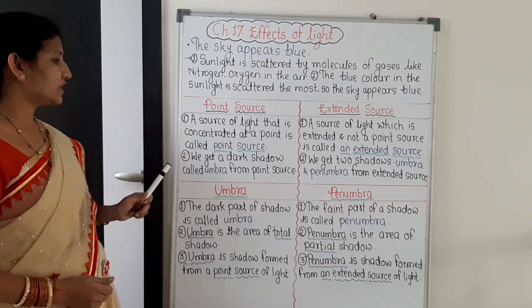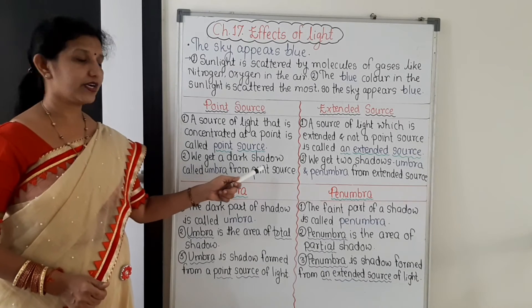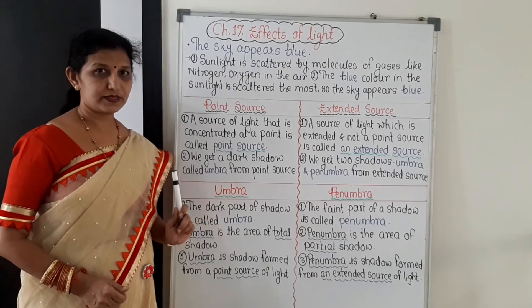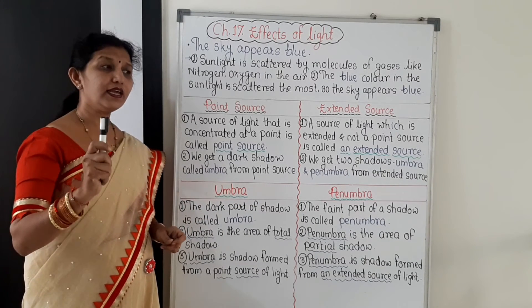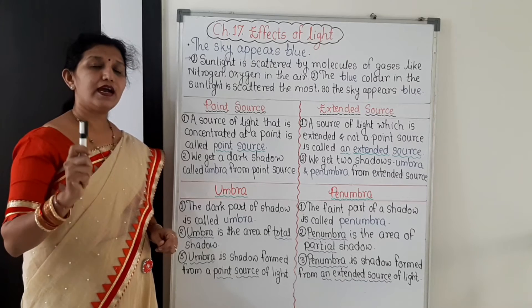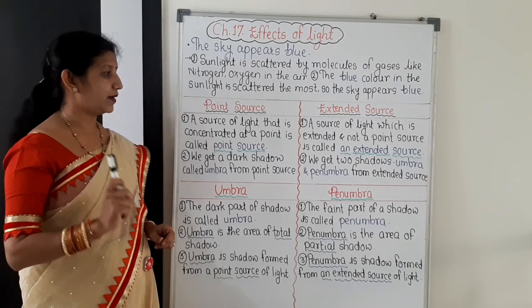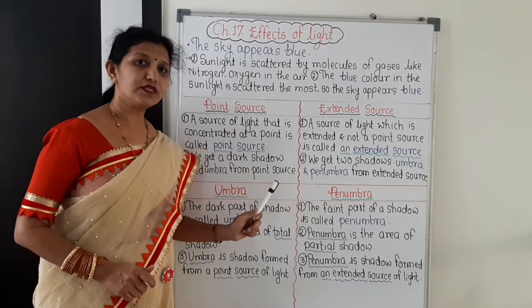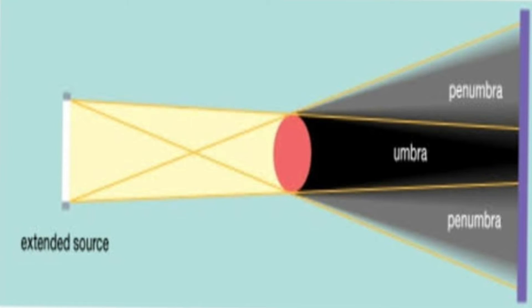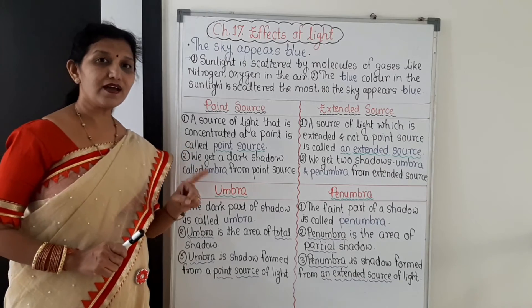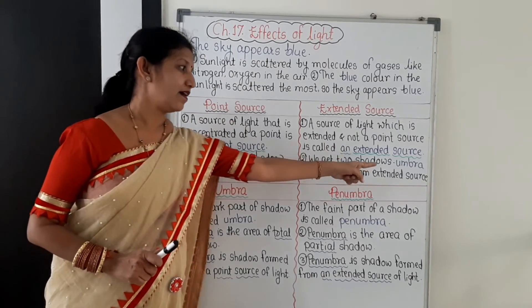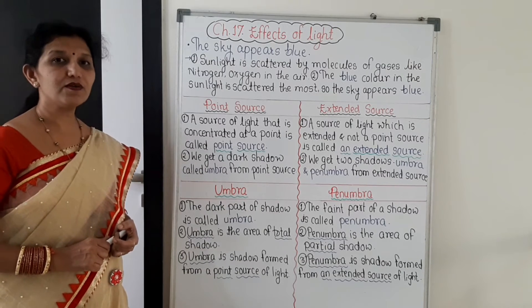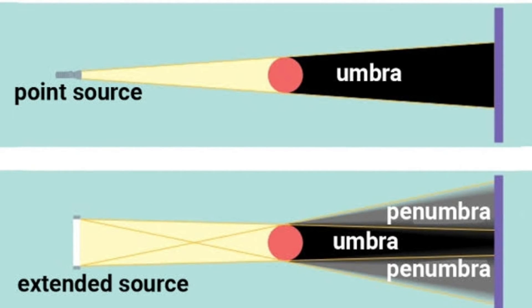From a point source, we get only a dark shadow, and this dark shadow is called umbra. But from an extended source, we get two shadows: umbra and penumbra. These two shadows are formed due to the extended source of light.